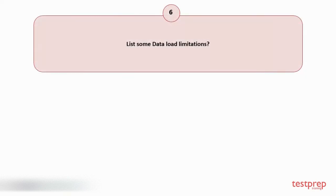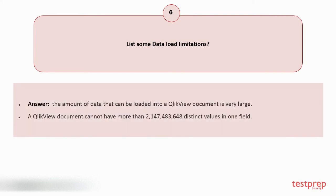Question number 6: List some data load limitations? The amount of data that can be loaded into a QlikView document is very large. A QlikView document cannot have more than 2,147,483,648 distinct values in one field.